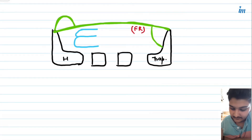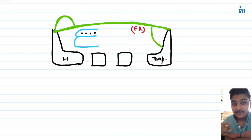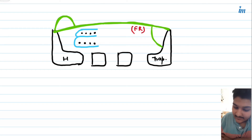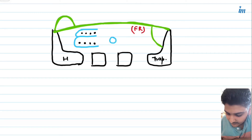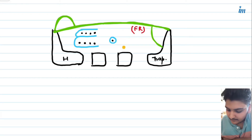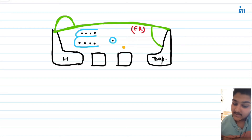Inside the ulnar bursa we have four tendons of flexor digitorum superficialis and four tendons of flexor digitorum profundus. We also have the radial bursa, along with the tendon of flexor pollicis longus, and the median nerve. Compression of the median nerve deep to the flexor retinaculum leads to carpal tunnel syndrome with certain manifestations.